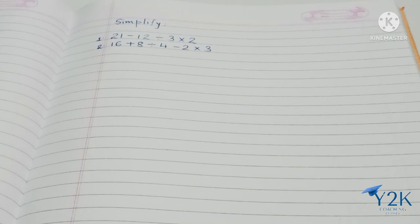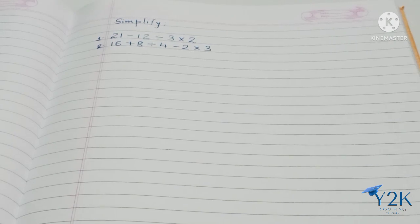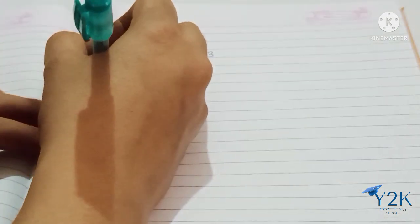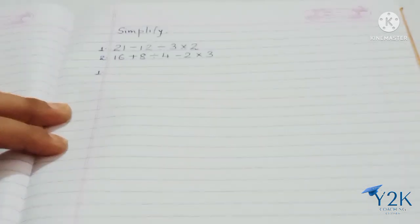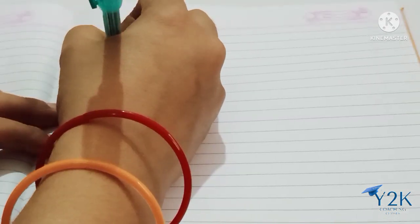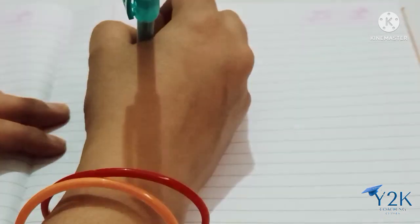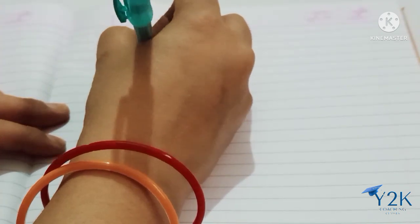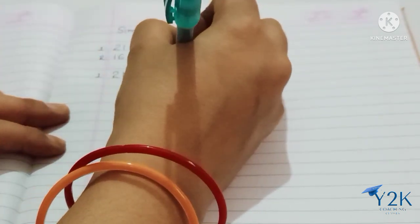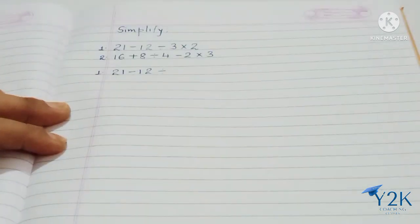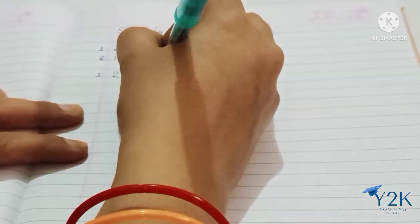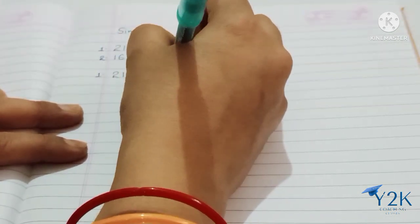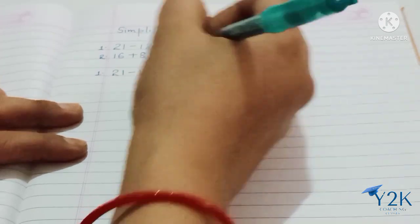We need to simplify these two sums. Let's start doing the first one. The first one is 21 minus 12 minus 21 minus 12, divided by 3 into 2.